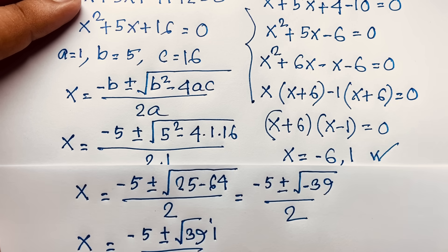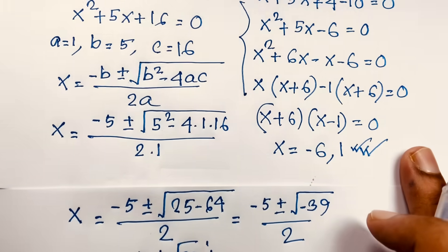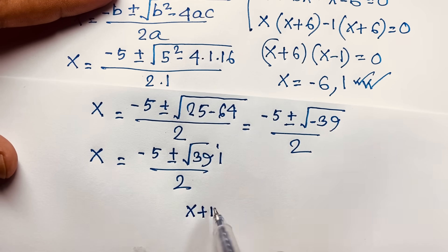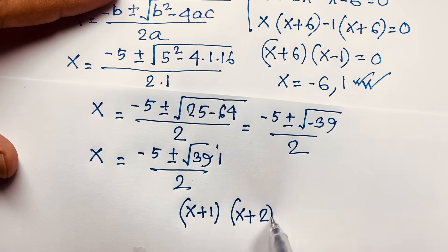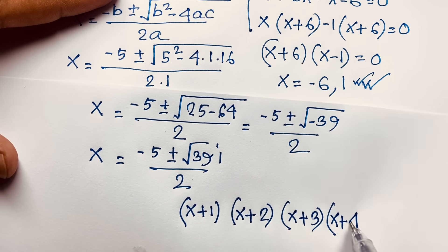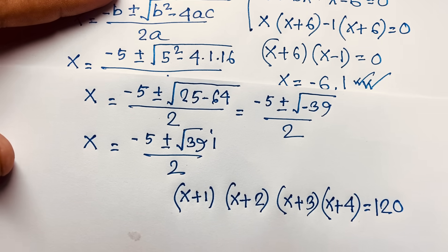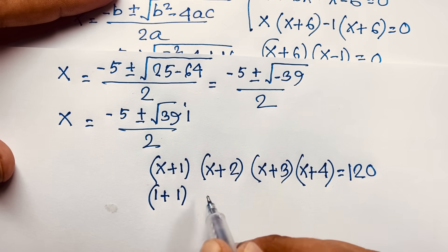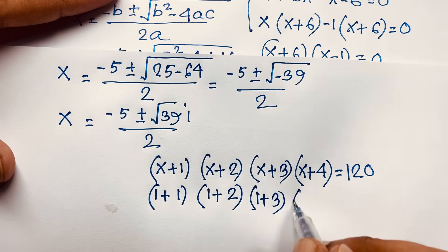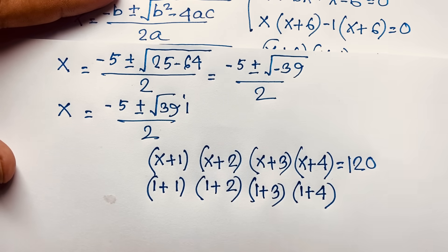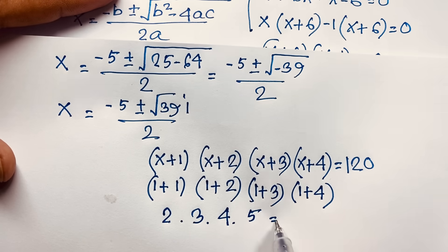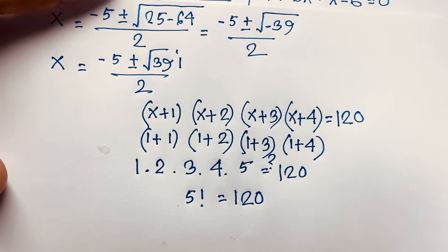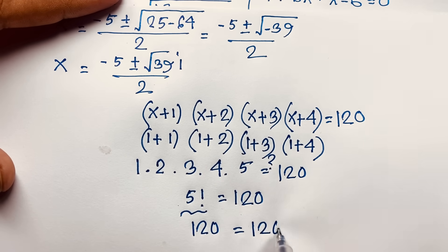Our real solutions are x = -6 and x = 1. Let's verify with x = 1: (1+1)(1+2)(1+3)(1+4) = 2·3·4·5 = 120. This equals 5! = 120, which confirms left-hand side equals right-hand side. ✓